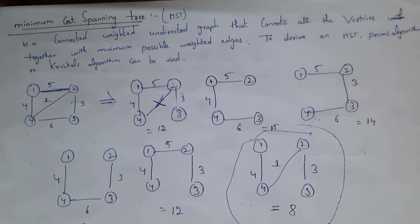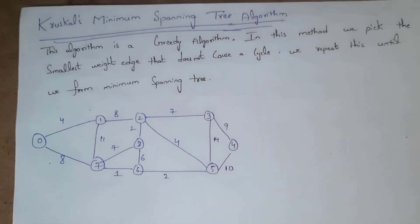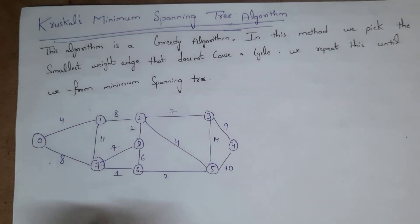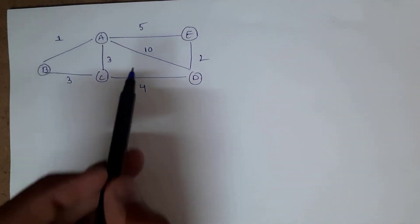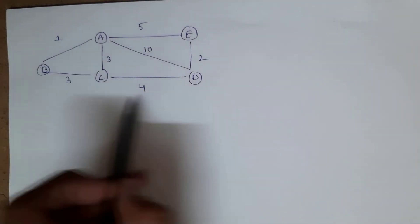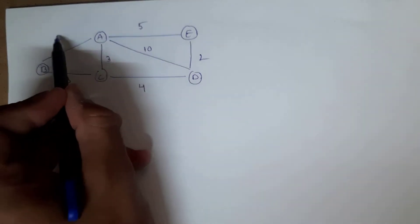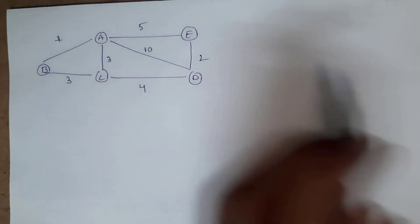For this purpose we use Prim's algorithm and Kruskal's algorithm. First I will explain Kruskal's method. In Kruskal's method we keep picking the smallest weighted edge, but if that edge forms a cycle we do not select it. We repeat the same process until we form the minimum spanning tree. For example, in this graph we will find the minimum cost spanning tree using Kruskal's method.